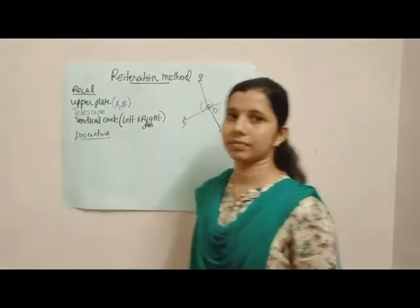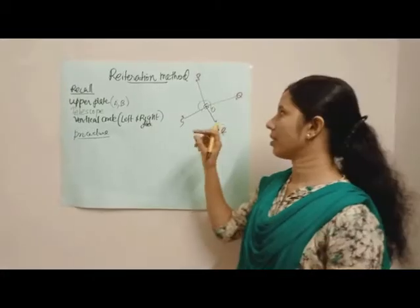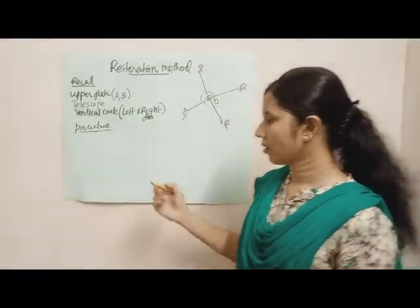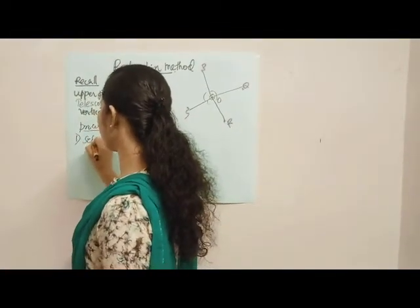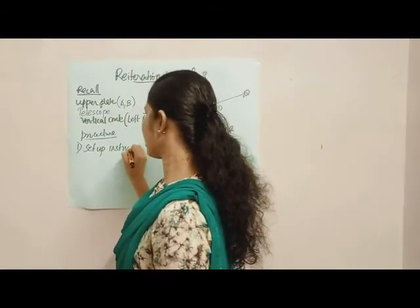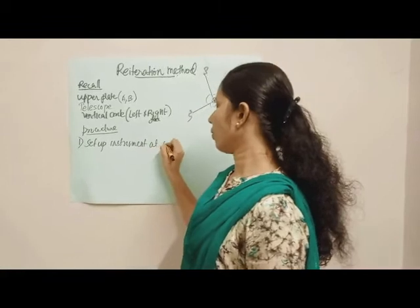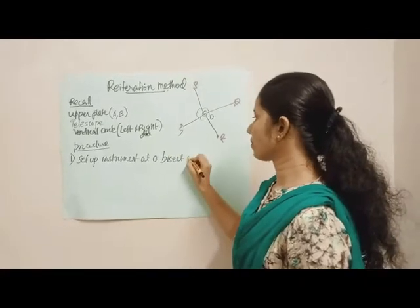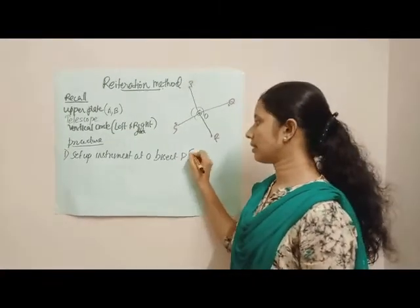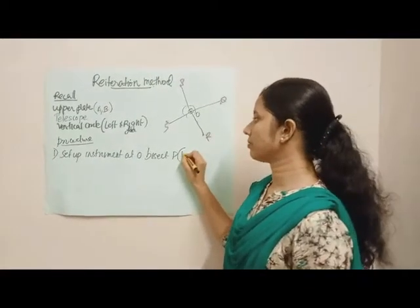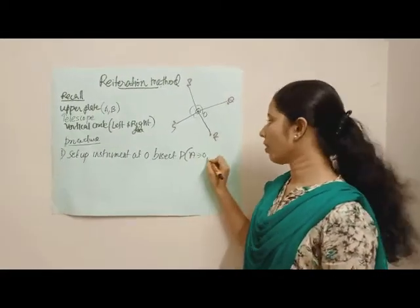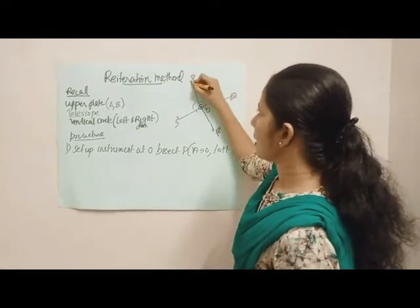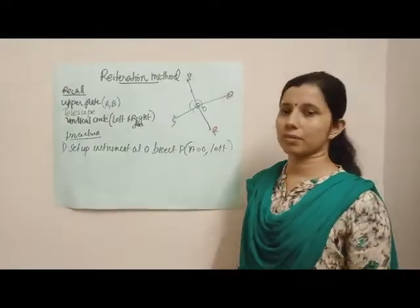The procedure of this method: the first step is to set up the instrument — the theodolite — at the center point or station point O, and bisect our first feature, P. Note that at this time, the reading shown by vernier A should be zero, and the instrument should be in the left face condition.